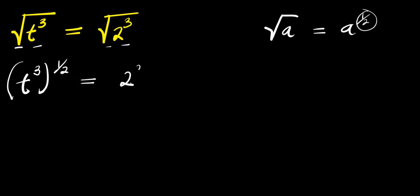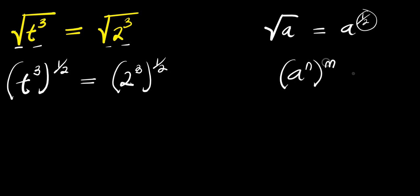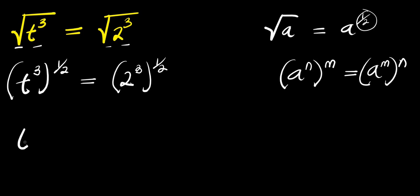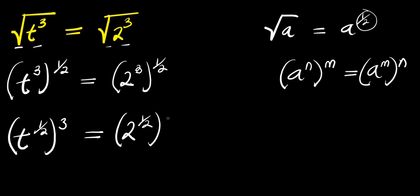And this equals 2 power 3, raised to the power of 1 over 2. Now if you have a to the power of n, raised to the power of 1 over n, we can rewrite the exponents. Applying that here, we get t power 1 over 2, raised to the power of 3, and this equals 2 power 1 over 2, raised to the power of 3.